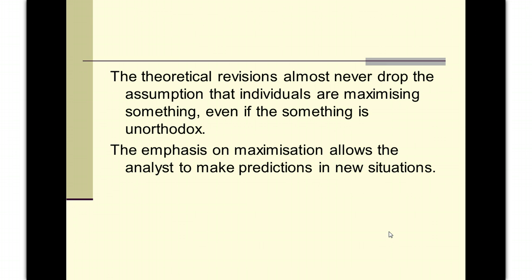By taking our rationality assumption — saying people are maximising, asking what they're maximising, then looking at how their situation changes — we can make predictions that form testable hypotheses. The government introduced a plastic bag levy to reduce consumption. What did economics say would happen? People would use fewer plastic bags. Did they? Yes — it fell by 95%. The theory fits the evidence. Similarly with student accommodation: make it cheaper, people supply more. Did they? Yes. The evidence fits.